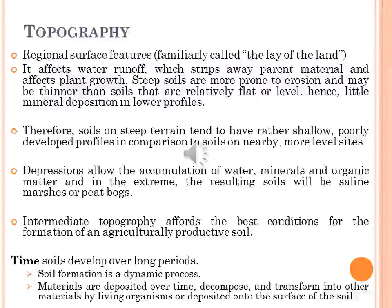In semi-arid regions, the low effective rainfall on steeper slopes also results in less complete vegetative cover, meaning less plant contribution to soil formation. For all these reasons, steep slopes prevent soil formation from keeping pace with soil destruction. Soils on steep terrain tend to have rather shallow, poorly developed profiles compared to soils on nearby flat sites. Depressions in the soil allow the accumulation of water, minerals, and organic matter, and in the extreme can result in saline marshes. Intermediate topography affords the best conditions for the formation of agriculturally productive soil.